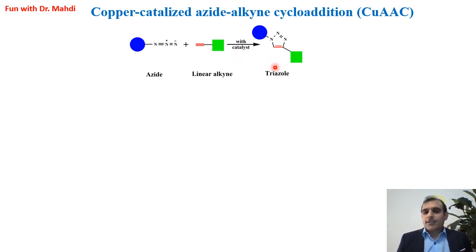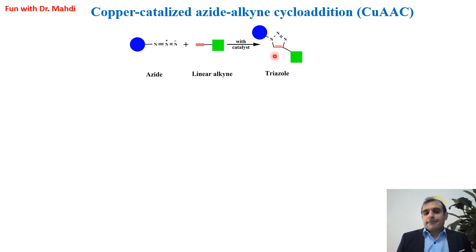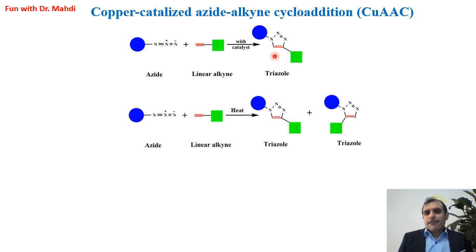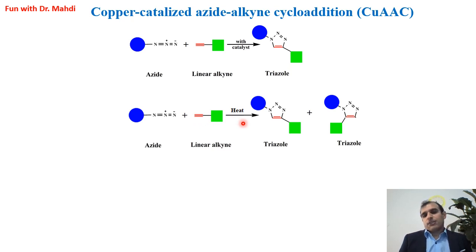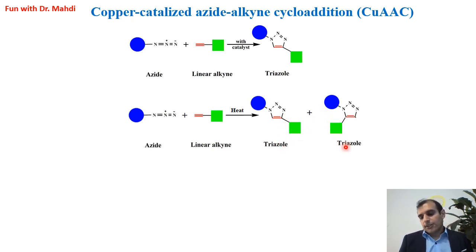The product will be a triazole — a five-membered ring. We can also do this click reaction in the presence of heat instead of copper. Again, it's a reaction between azide and linear alkyne, but in this case, we need to increase the temperature to 100 degrees, and we will have two isomers: 1,4-triazole and 1,5-triazole.